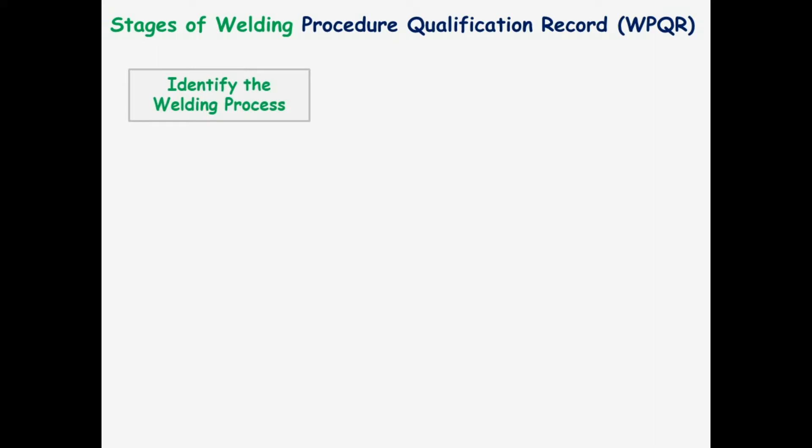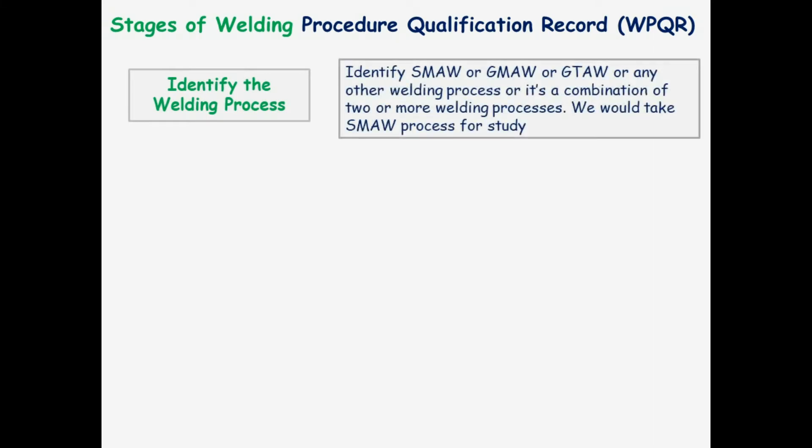Let us discuss the stages of Welding Procedure Qualification Record, WPQR. First, identify the welding process — that is, identify SMAW, GMAW, GTAW, or any other welding process, or a combination of two or more welding processes. We would take the SMAW process for our study.